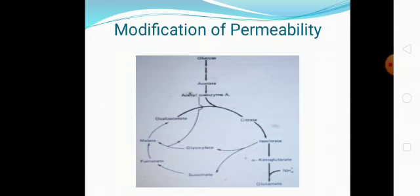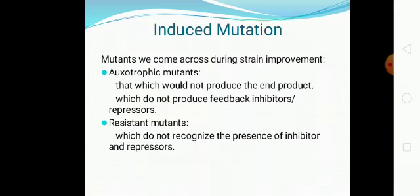This is one of the classical examples given in the previous session. That was only one rare example of overproduction without mutation, but 99% of strain improvement involves mutation. When you do mutation, the question normally asked is what type of mutants will be generated. Usually two types of mutants are generated during strain improvement: one is called auxotrophic and one is called resistant.